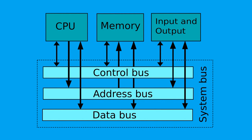The address bus is also called the memory bus. It is a unidirectional bus and is used by the CPU to read and write in the memory.